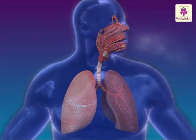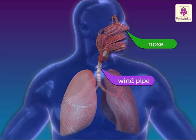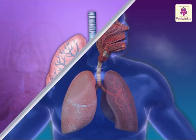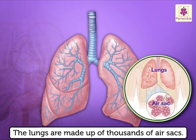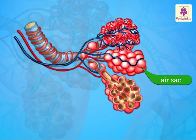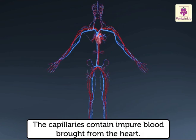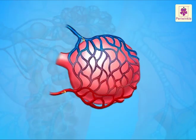As you breathe in through your nose, air containing oxygen goes in through the windpipe and reaches the lungs. The lungs are made up of thousands of air sacs which look like bunches of grapes. Each air sac is surrounded by capillaries. These capillaries contain impure blood brought from the heart.